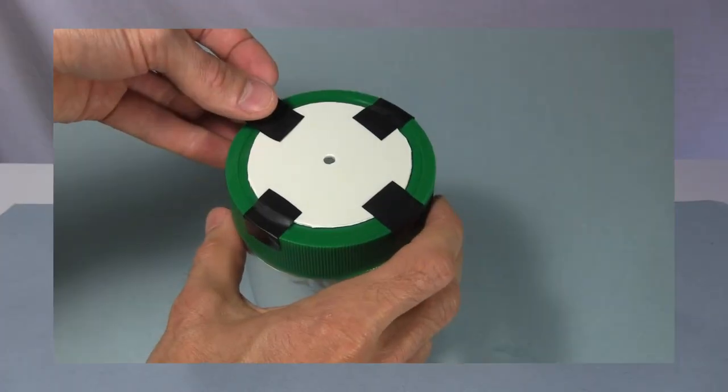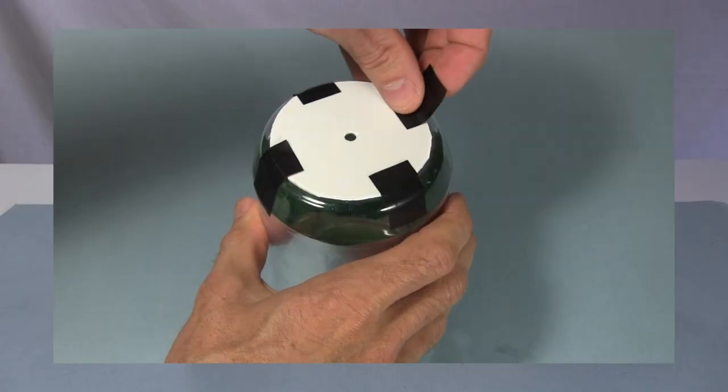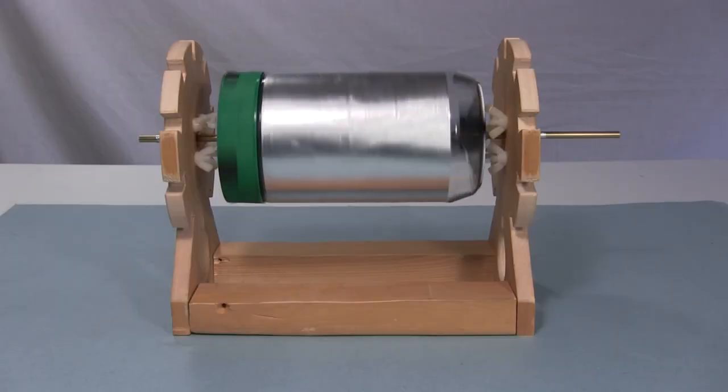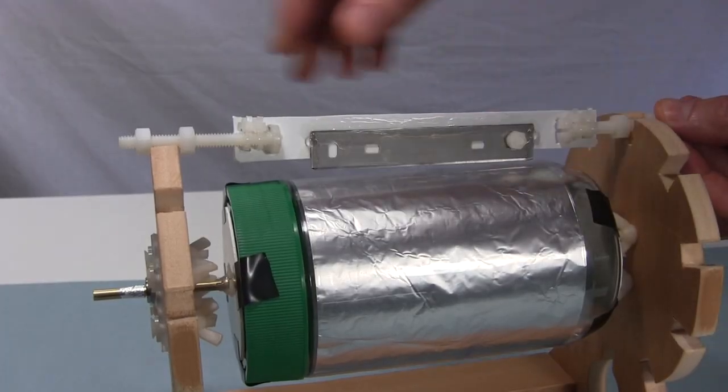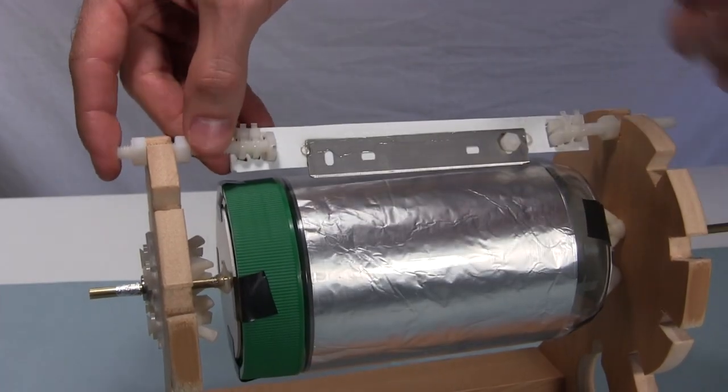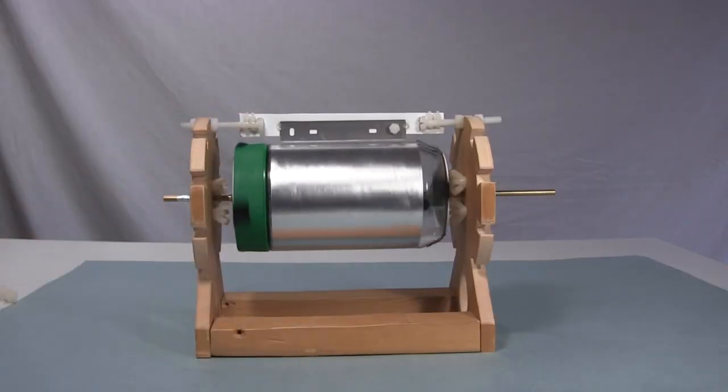Remember that I temporarily taped these plastic discs to the cylinder. They can be adjusted so that the cylinder is centered with respect to the shaft. To do that I put an electrode on the top, pointing straight down at the cylinder. When I spin the cylinder, you can see the gap between the electrodes and the cylinder isn't even.